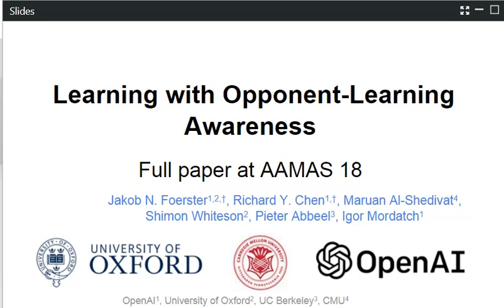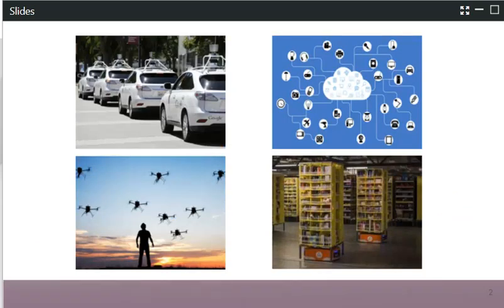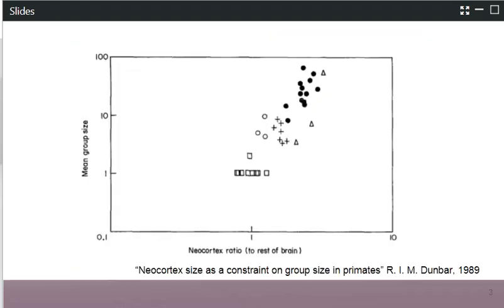There's a large number of reasons to care about multi-agent learning. For a start, the entire world is full of multi-agent problems. It doesn't matter if you think about cars on the road, the internet of things, or drones in the sky. In all of these settings, a large number of different agents has to take decentralized actions based on local observations in order to achieve a common goal.